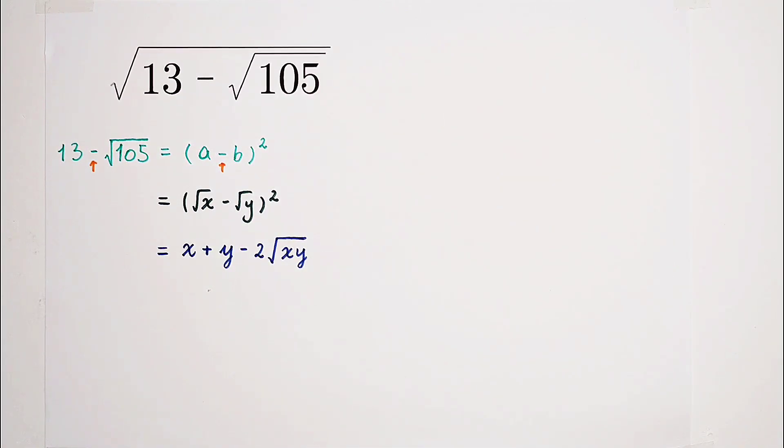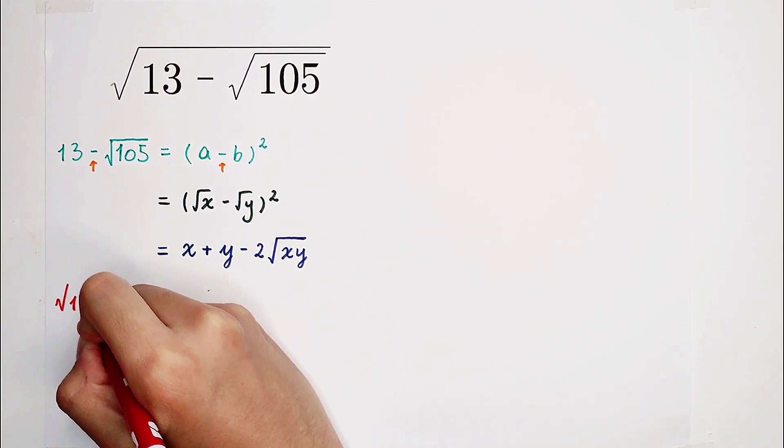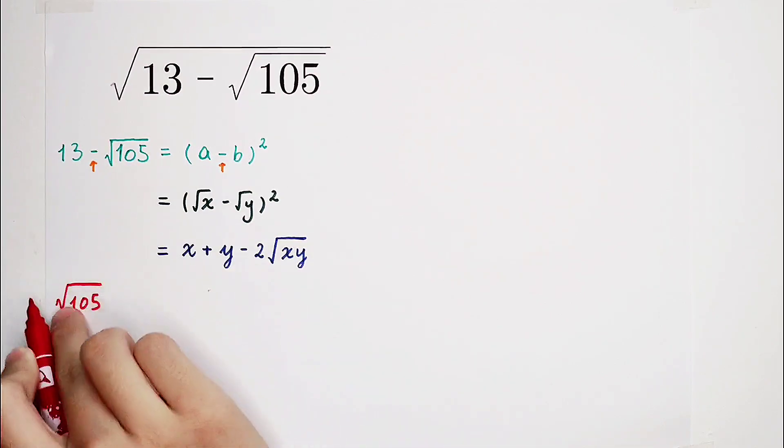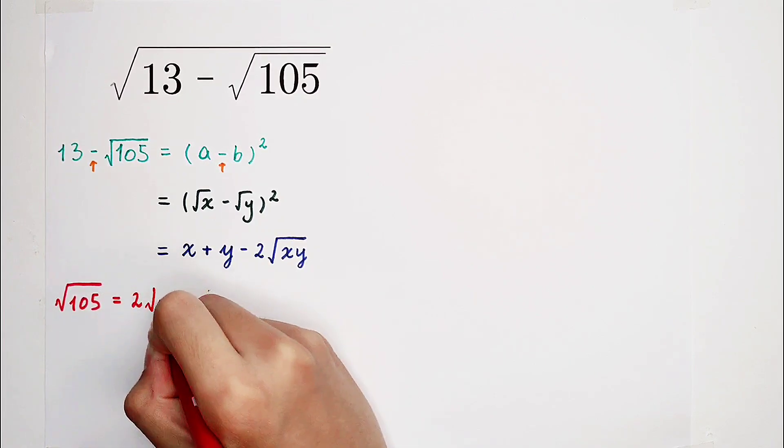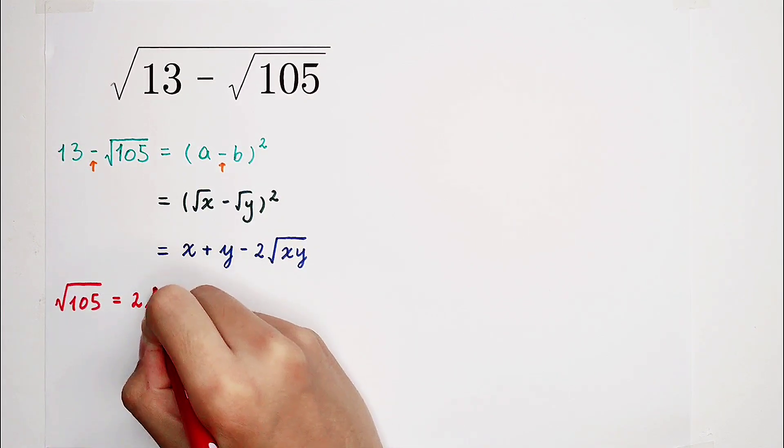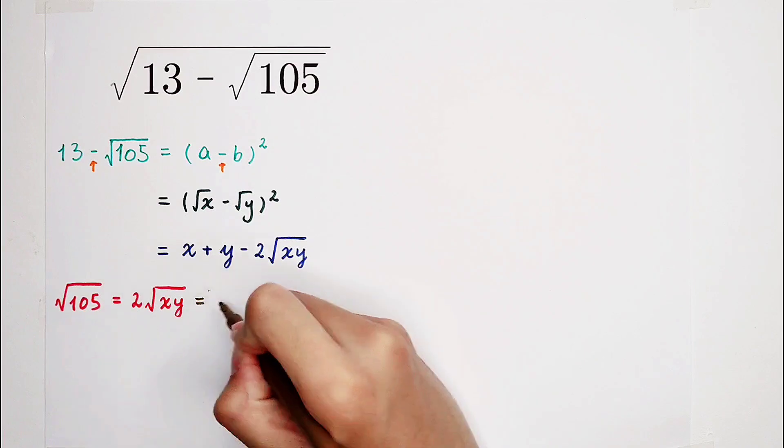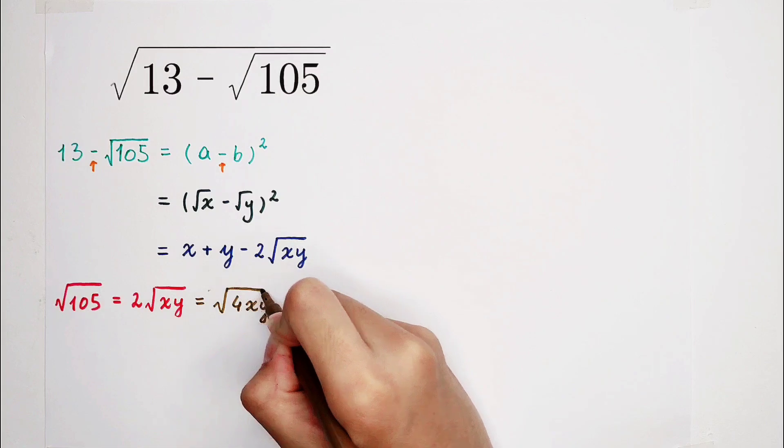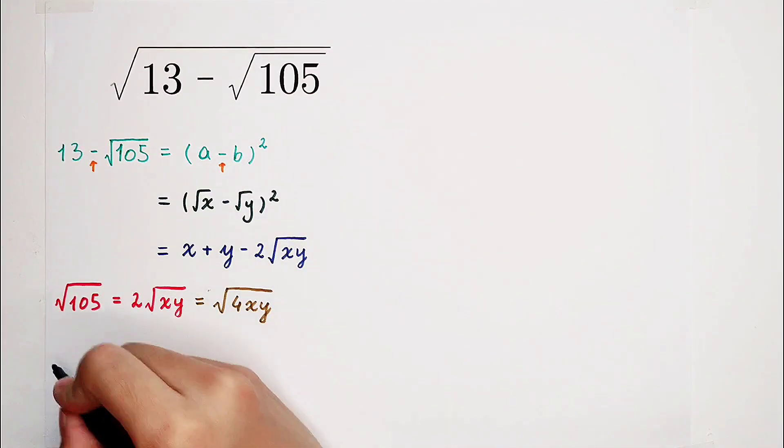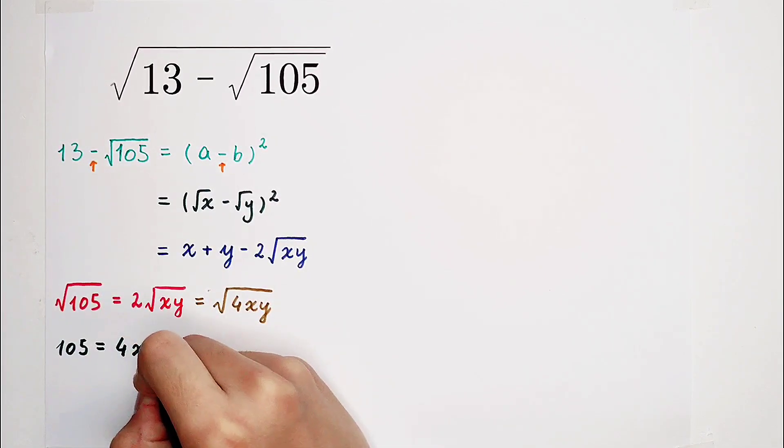Now a problem is coming. How can I solve this problem? Can I find a solution? Square root of 105 should be equal to 2 times square root of xy. And we know that 2 times square root of xy can be equal to square root of 4 times xy. That means 105 should be equal to 4 times xy.